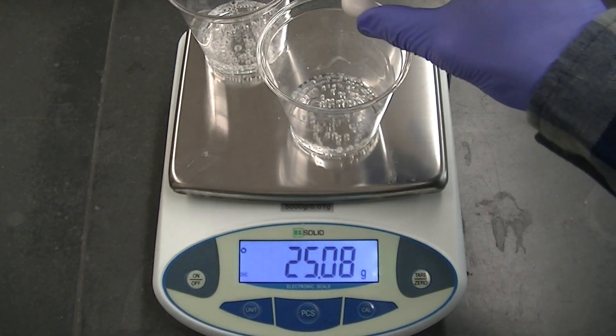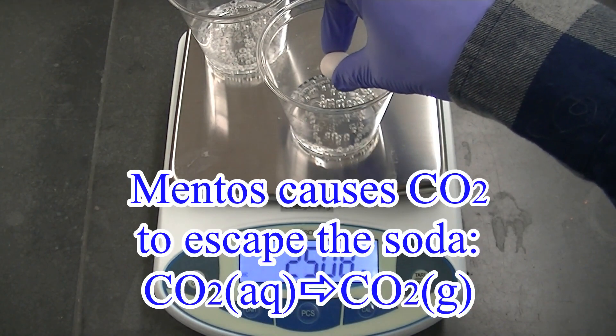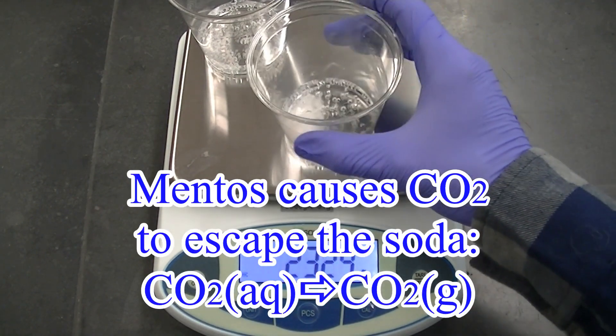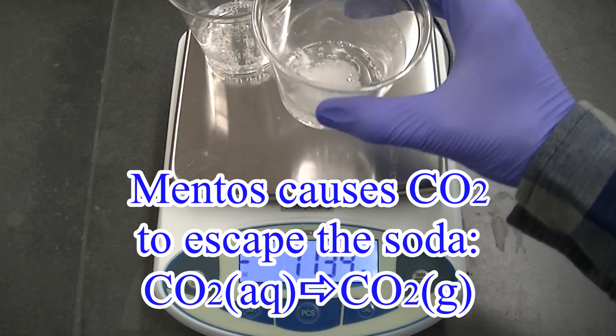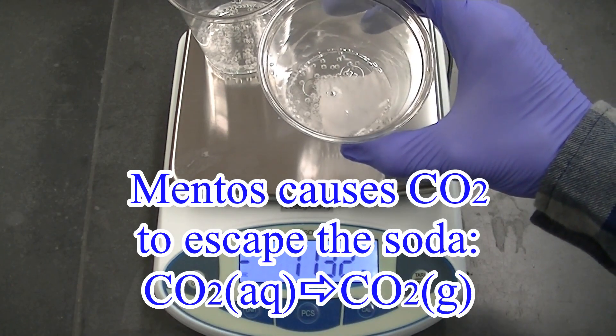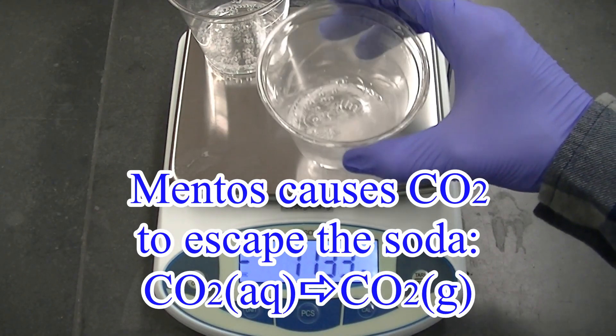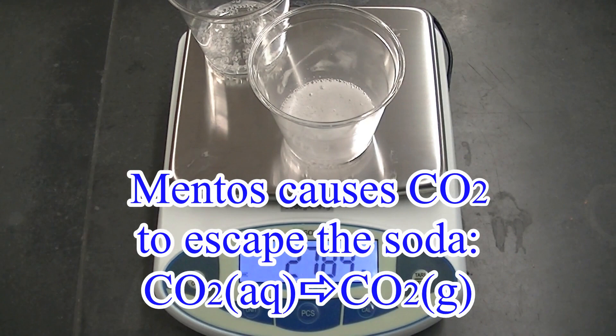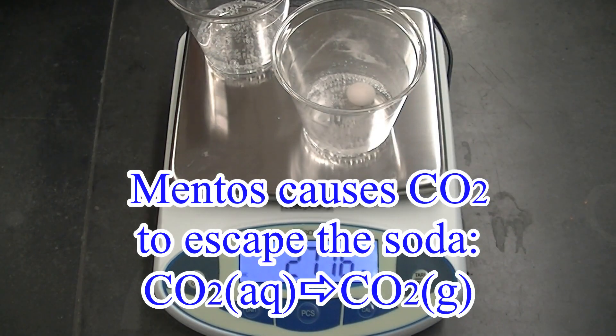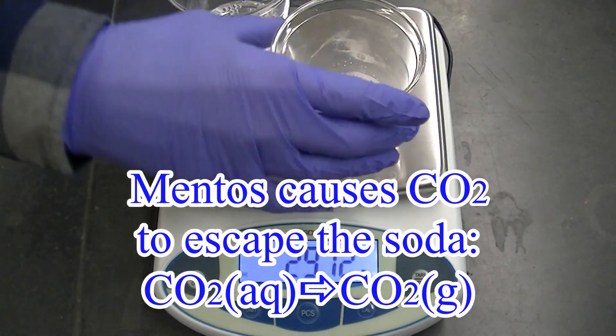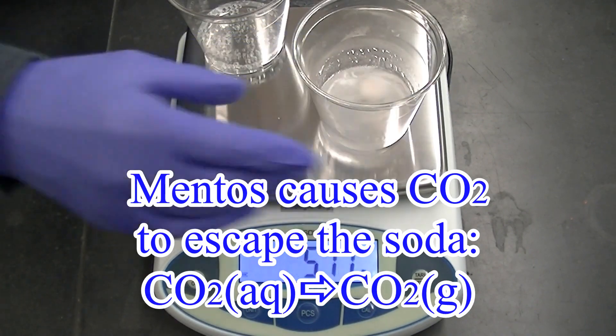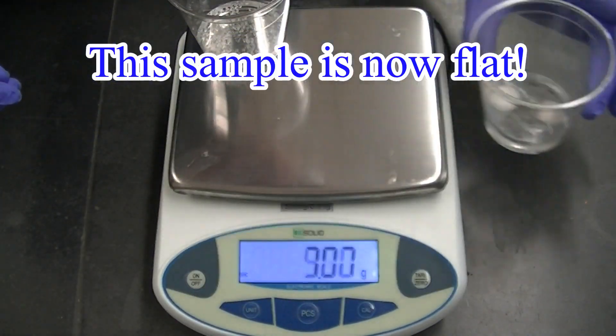Now we'll degas this sample by adding a Mentos candy to it. The Mentos candy causes the carbon dioxide to come out of the soda. Let's add another one to help it come out a little better. I'm going to leave that off to the side.